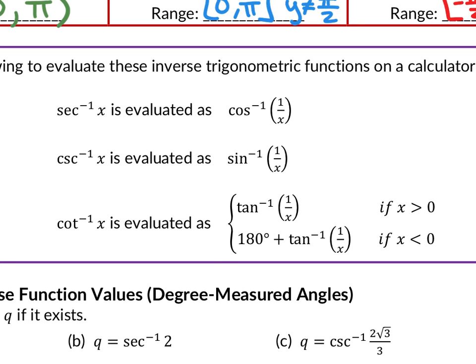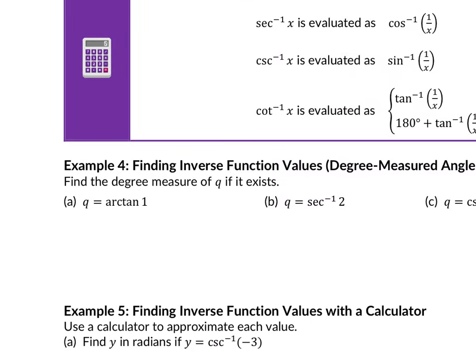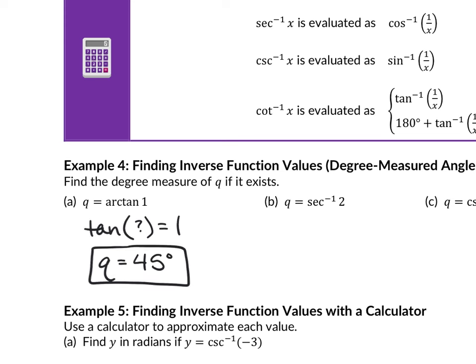The first examples we'll do without a calculator. Find the degree measure: Q = arctan(1). We're asking what angle gives tangent an output of 1, in degrees. That's 45°. Make sure when writing degree answers you include the degree symbol.